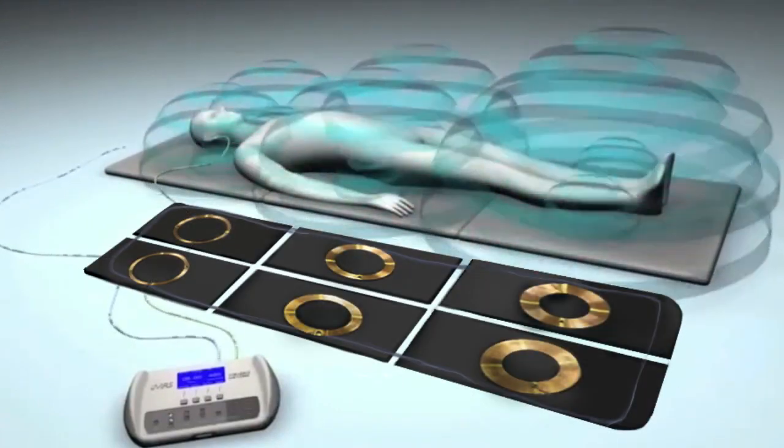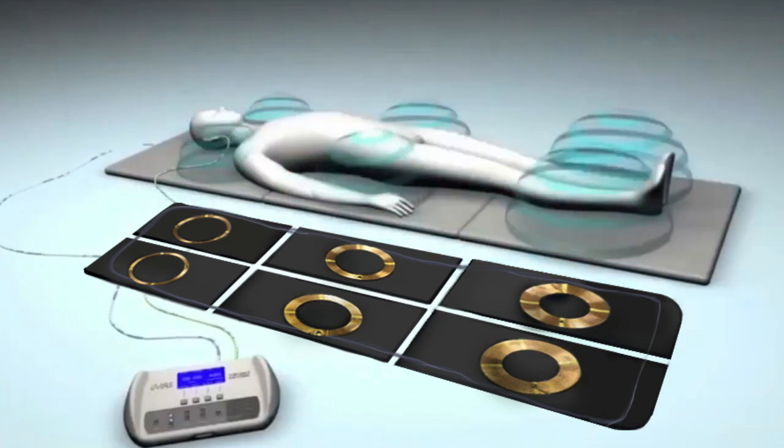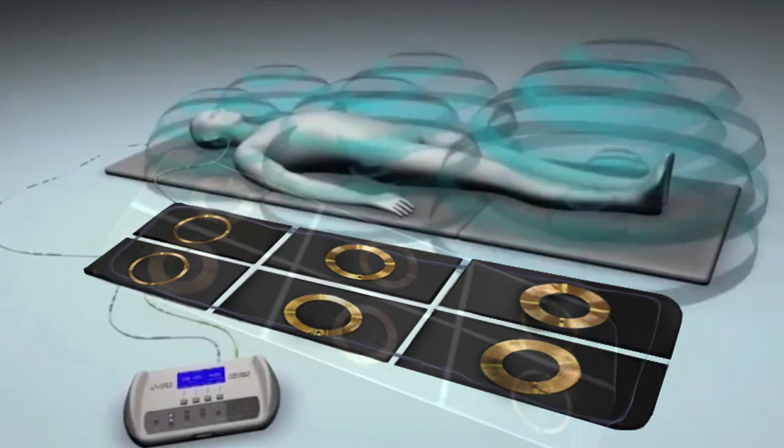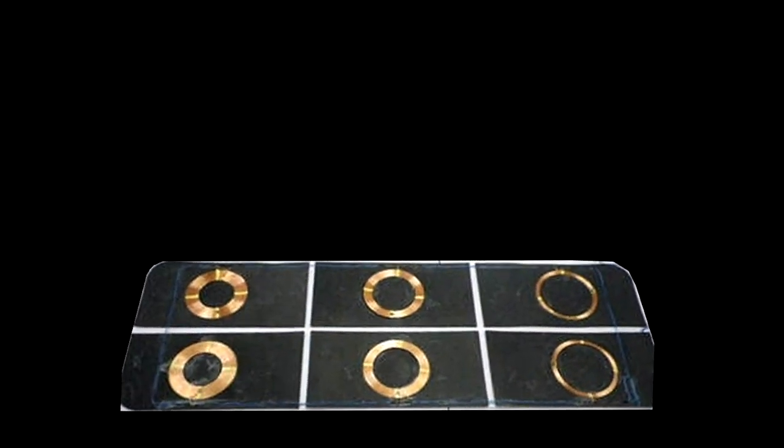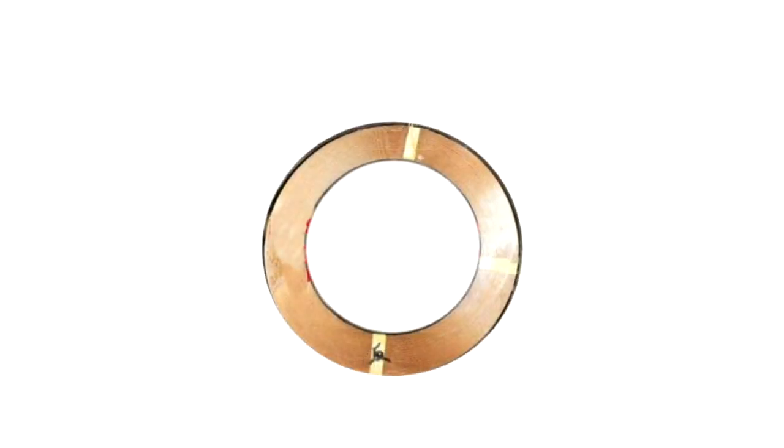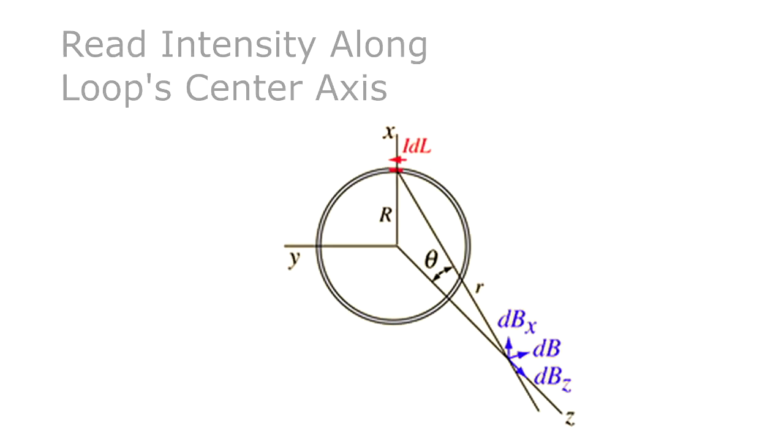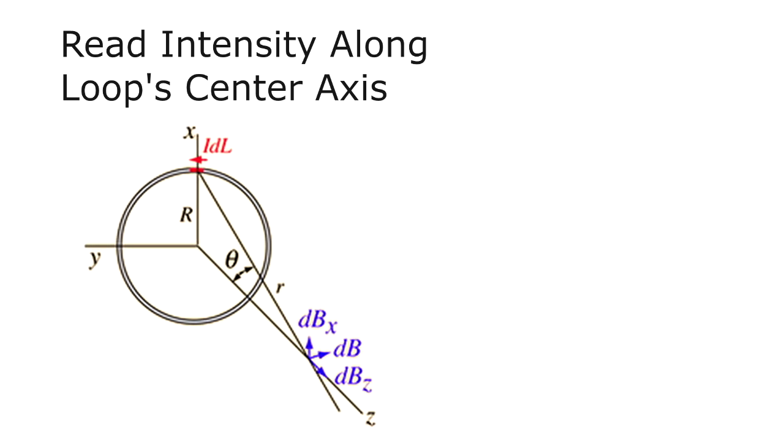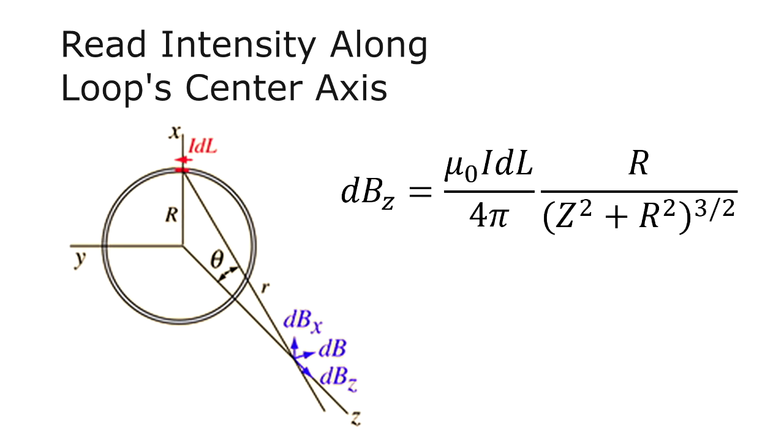Now let's take an example of a loop of current, which we use in PEMF devices. The Biot-Savart law is going to give us an equation telling us the magnetic field strength any distance from that loop of current. But it's easiest for simplicity just to take the intensity along the center axis of the loop. That gives us a 1 over 3 halves drop-off, and it's dependent on both the radius of the loop and the distance away.